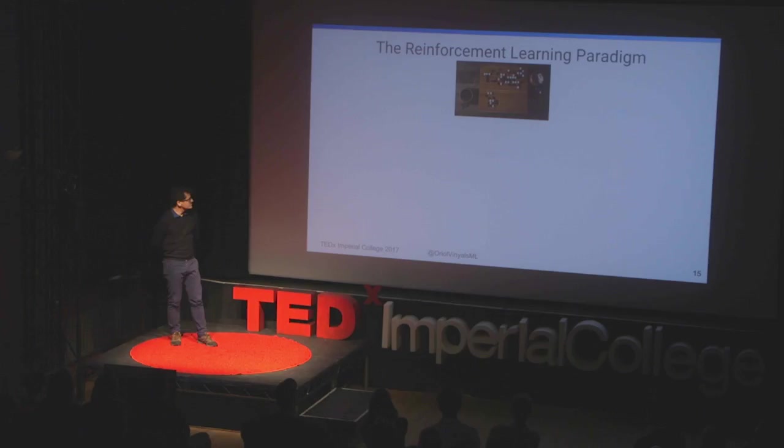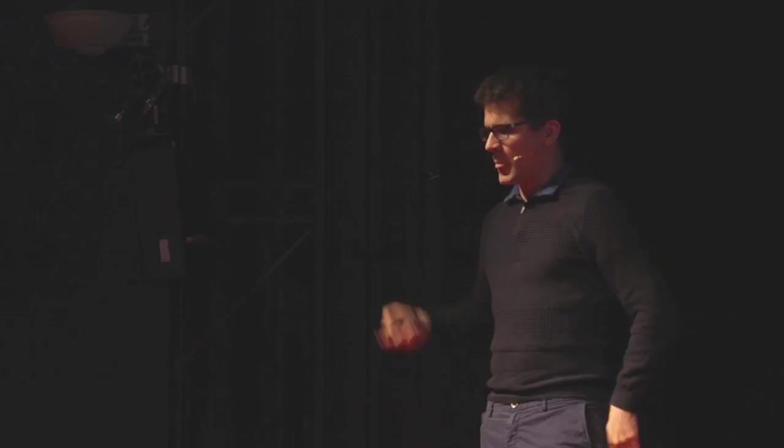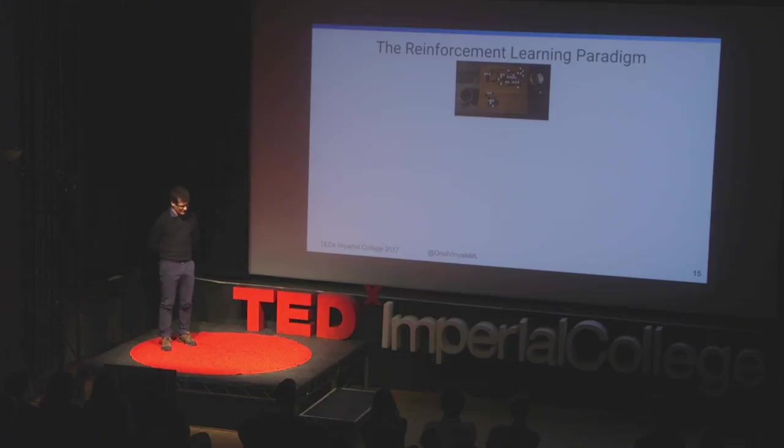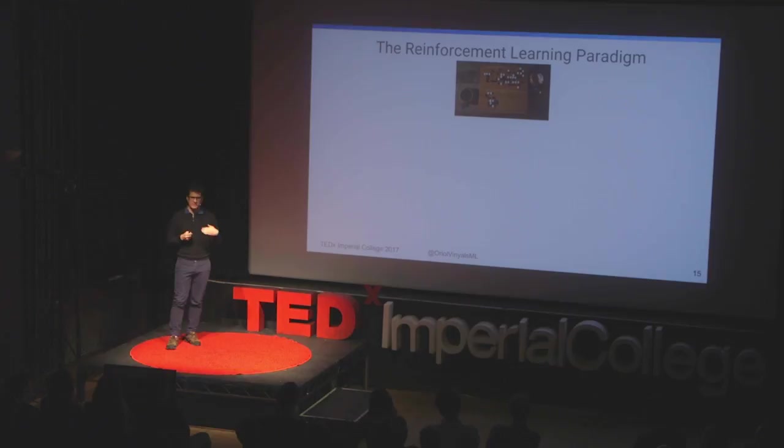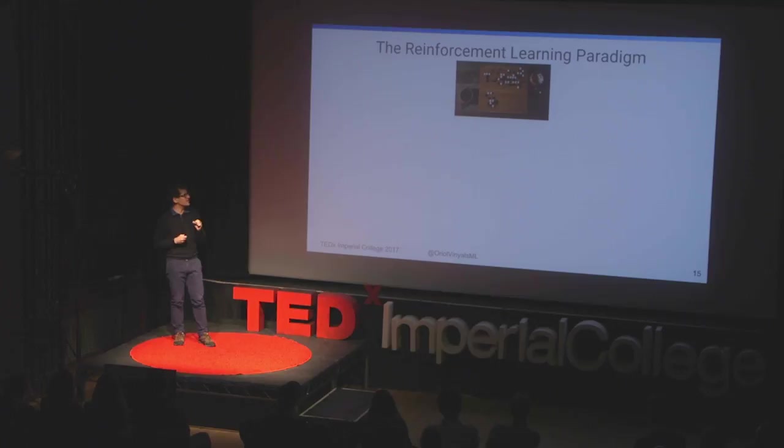Now there is another paradigm I wanted to describe: what if we cannot get a large database of examples, or even better, we want to actually go beyond human capabilities? If we want to beat humans, and we imitate them, we are kind of bounded by how good they are. This is the reinforcement learning paradigm. For instance, in the game of Go, this was heavily used for the recent result that AlphaGo achieved last year.